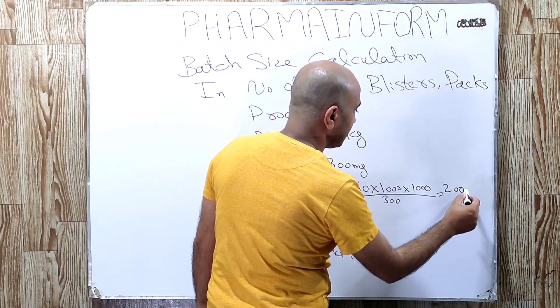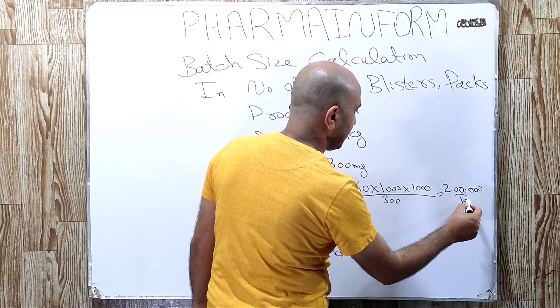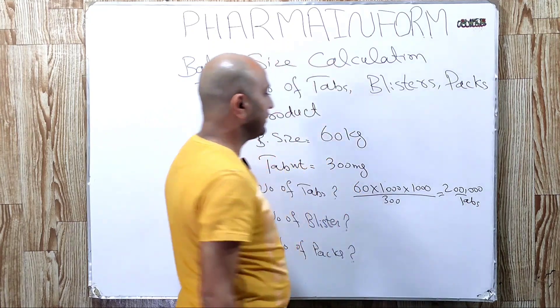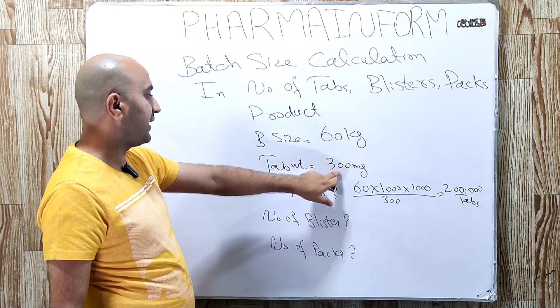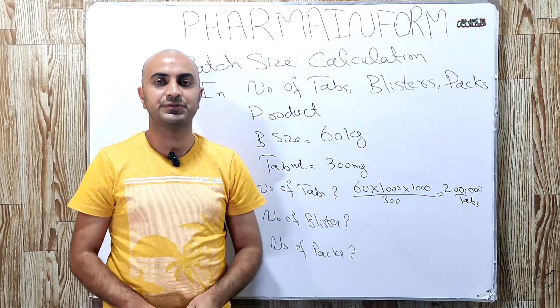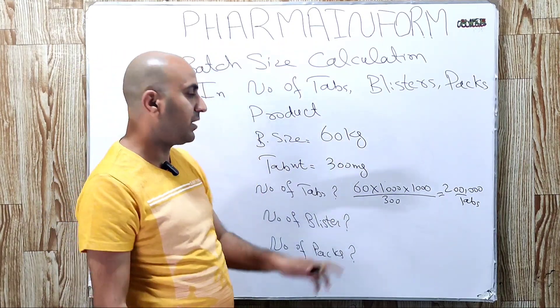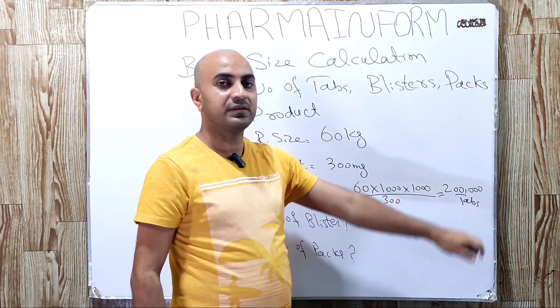The answer will be 2 lakh (200,000) tablets. This means if we have 60 kg batch size and individual tablet weight is 300 mg, our number of tablets will be 2 lakh.